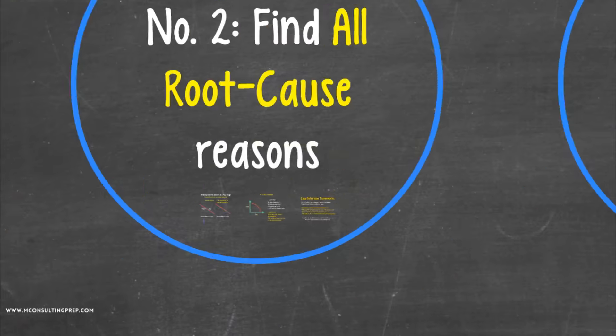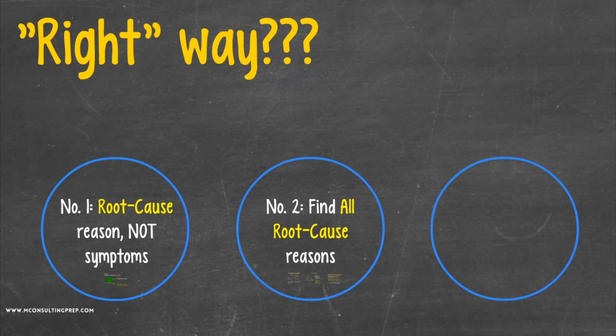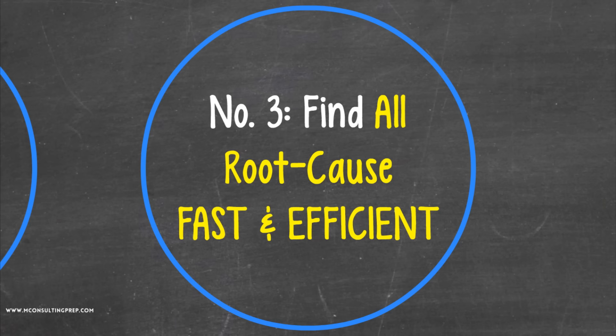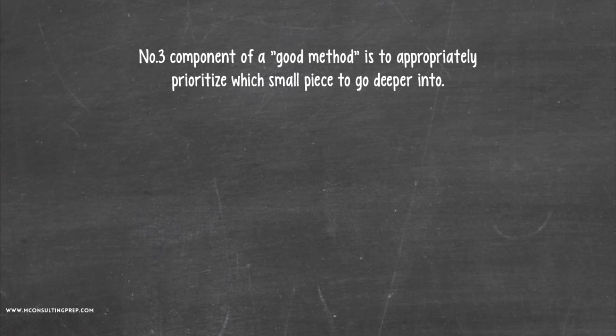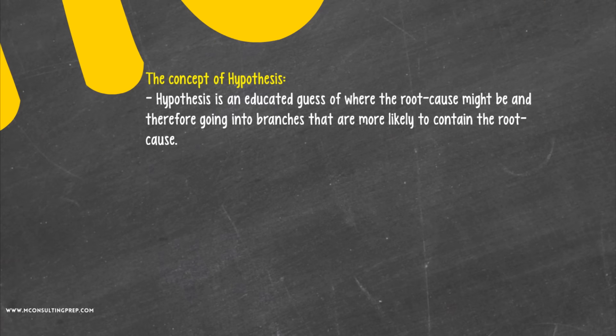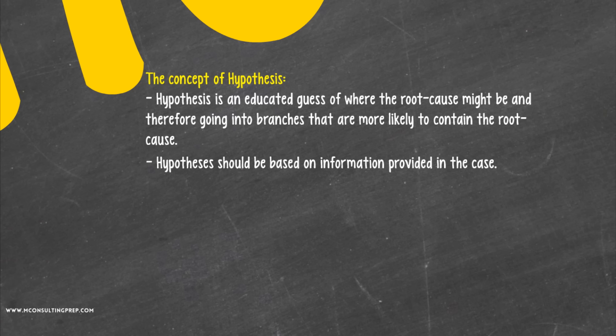Okay, let's come back to the big picture. Now that we can break down the problem in MECE ways, we have to find the root cause fast. The number three component of a good method is to appropriately prioritize which small piece to go deeper into. This leads us to the next concept: Hypothesis. Hypothesis is an educated guess of where the root cause might be, and therefore guides you into branches that are more likely to contain the root cause. Hypothesis should be based on information provided in the case.